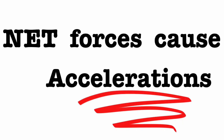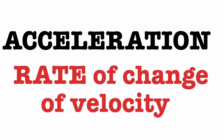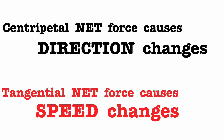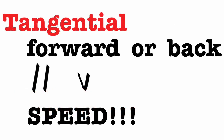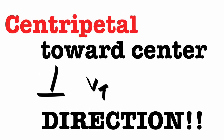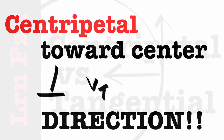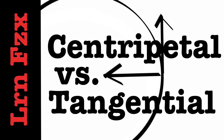Keep in mind that net forces cause accelerations, and accelerations are the rate of change of velocity. Centripetal net force causes a change in direction; tangential net force causes a change in speed. Tangential is just forward or backward — it's parallel to the velocity, all about the speed. Centripetal is toward the center, perpendicular to your direction of motion — all about direction. Keep them separate: centripetal and tangential. Put them together.